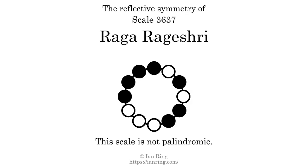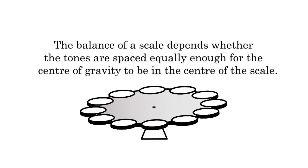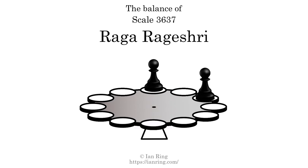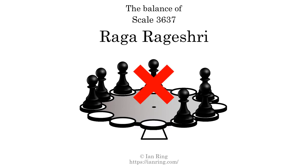This scale has no reflective symmetry. This scale has a different pattern of intervals ascending and descending, so it is not palindromic. This scale has no ridge tones. The balance of a scale depends on whether the tones are spaced equally enough for the center of gravity to be in the center of the scale. This scale is not balanced.